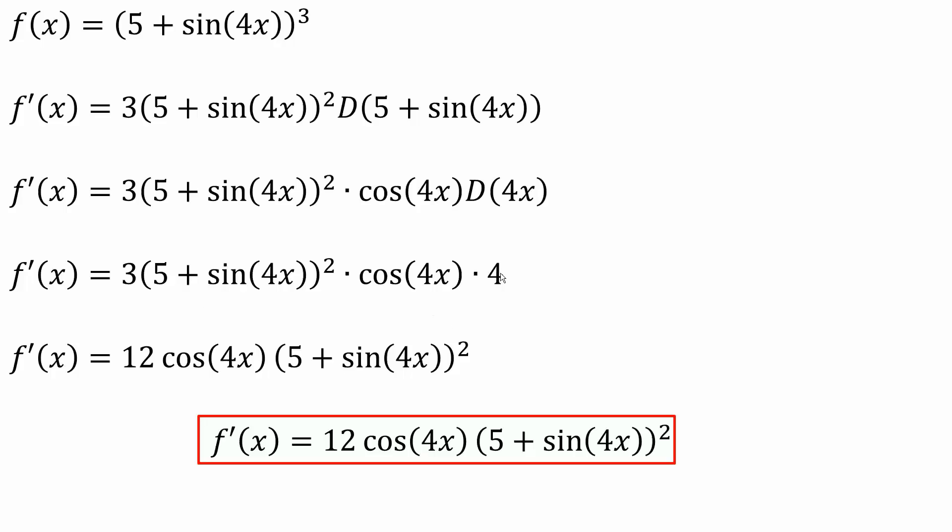So 3 times 4 is 12. We can put cosine parentheses 4x times parentheses 5 plus sine parentheses 4x close parentheses squared, and so this right here is our final answer, and that's all we need to do for this type of problem.